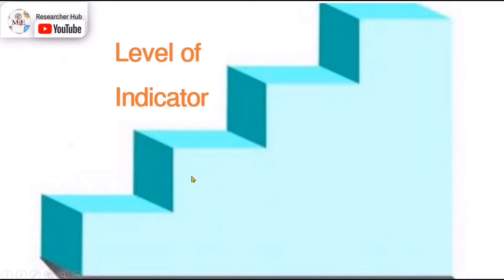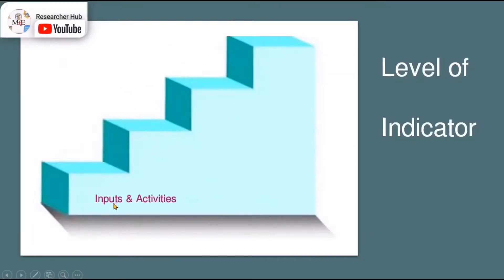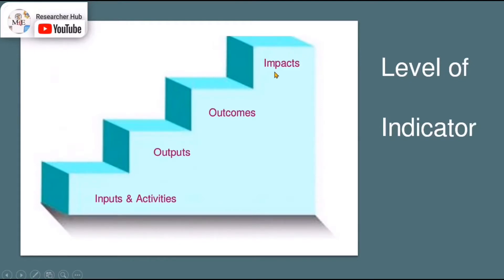Today we're going to discuss the levels of indicators. For those who haven't watched the other video where I discuss the different elements of the project — since the indicators will go along with the project components — here are the project components: we have inputs and activities, outputs, outcomes, and impacts. If you'd like to understand the project clearly, please watch my video linked below titled 'The Project Log Frame' to get a better understanding of all these components.